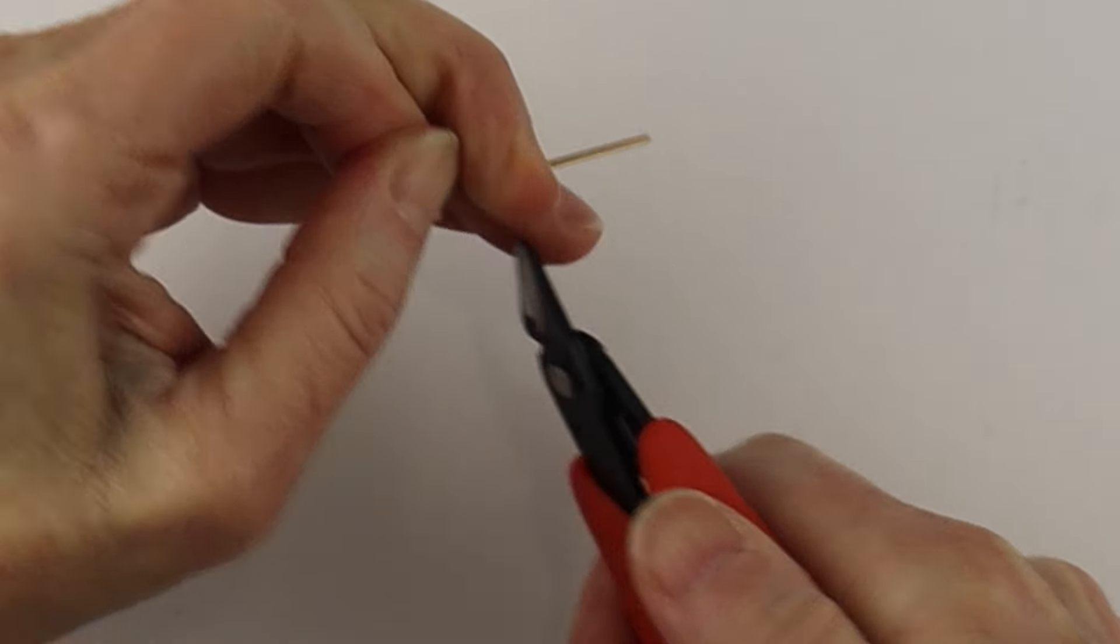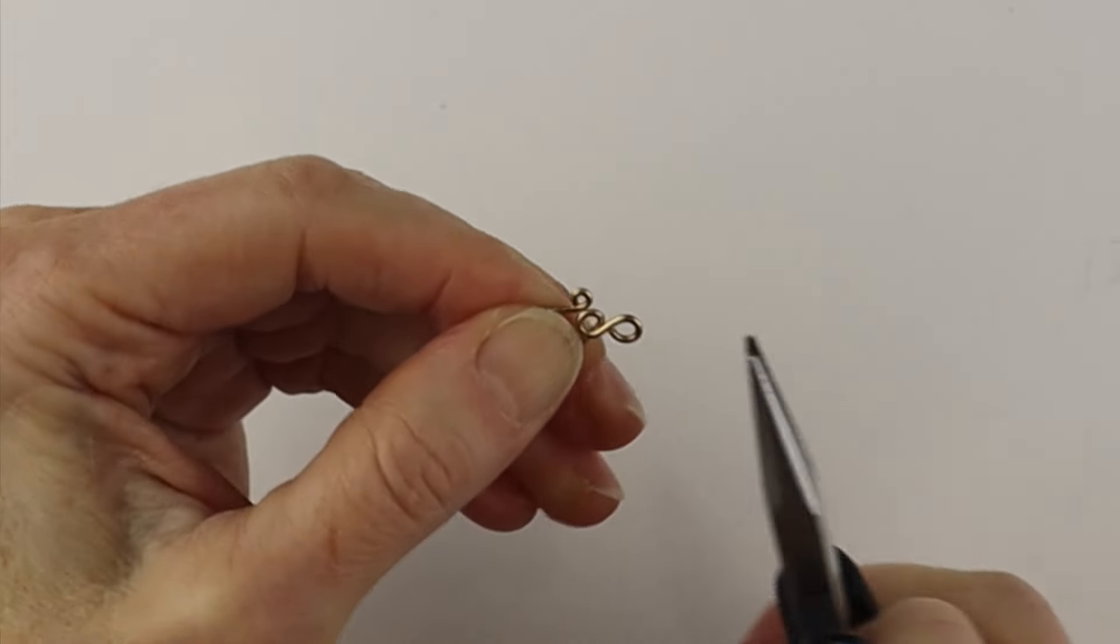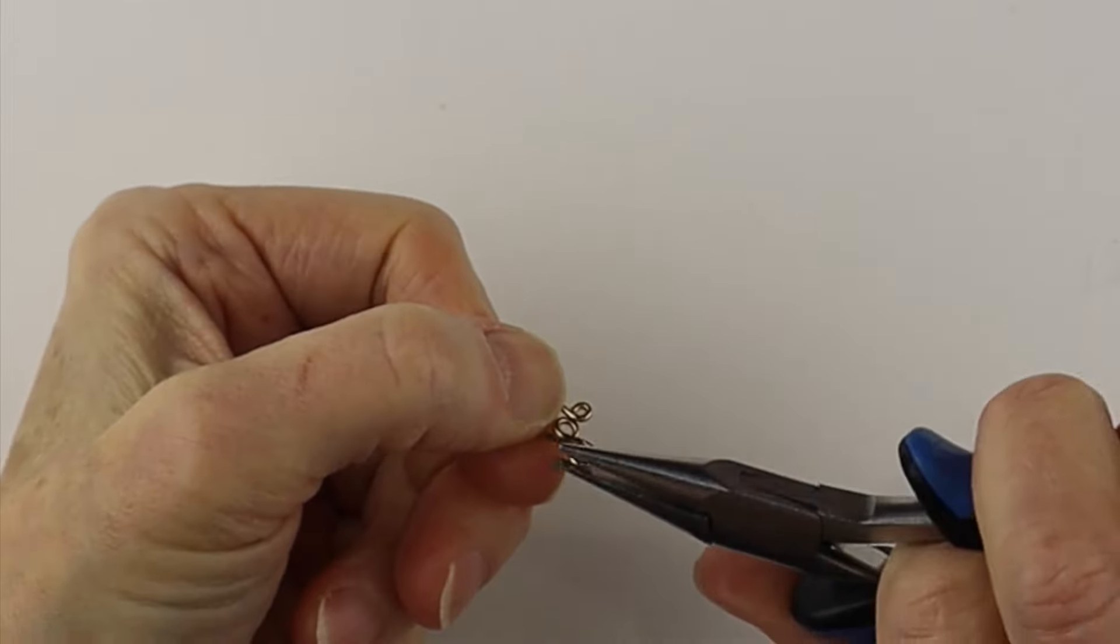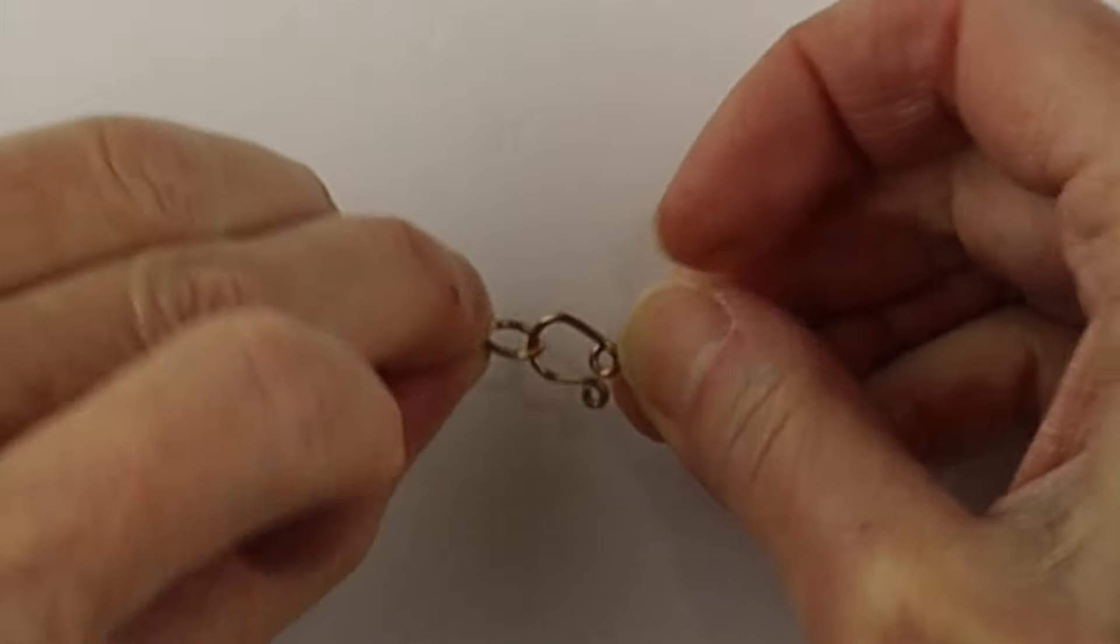Then we need another little loop here. We're just going to take these pliers, or you can make it bigger if you want, and do a little loop. Give that a clip and pinch that so it's flush. Adjust it so they're level. Then we'll take that and that can just hook right into there.